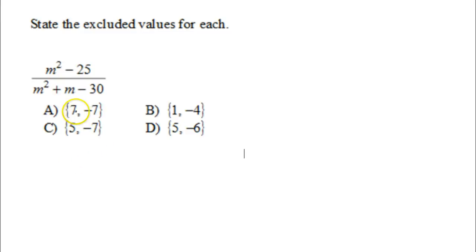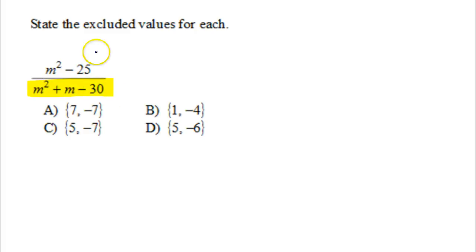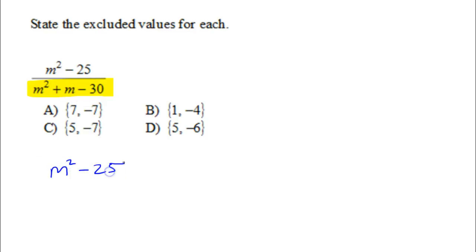Let's find the excluded values of this rational expression. Excluded values happen because you cannot divide by 0. So let's focus on the denominator. I'm not going to do anything with the numerator because the numerator can be 0 if it wants.